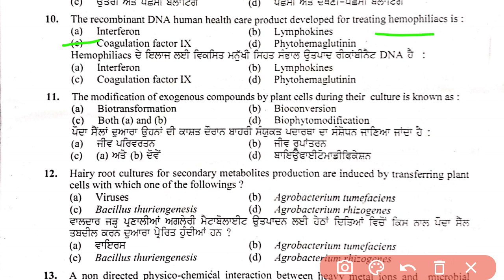Eleventh question: the modification of exogenous compounds by plant cells during their culture is known as what process? When plant cells modify exogenous material, the process is called biotransformation and bioconversion. So the answer is biotransformation and bioconversion.